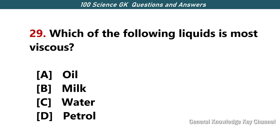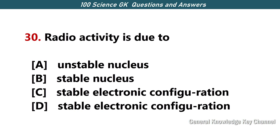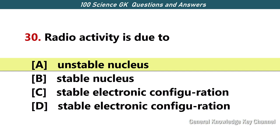Which of the following liquids is most viscous? Answer A — oil. Radioactivity is due to — Answer A — unstable nuclei.